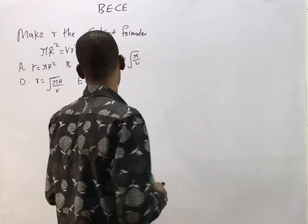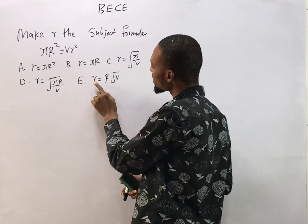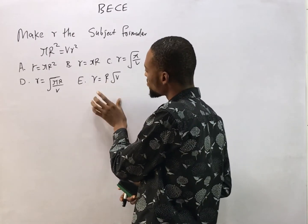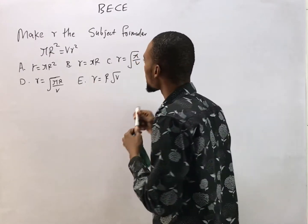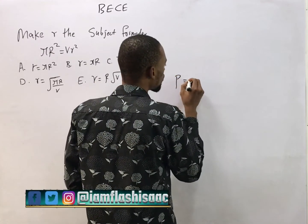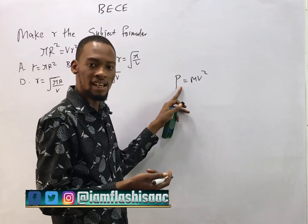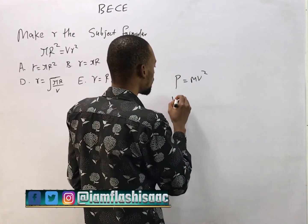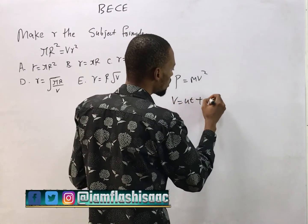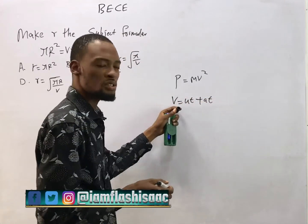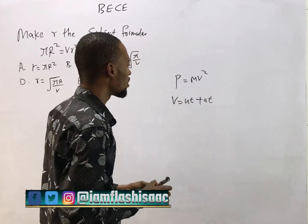Look at option E — it says r equals root V. In this case the subject is r. So if I give you p = mv², the subject is p. If I say v = ut + at, the subject is v. It's that single variable that every other thing is equal to.